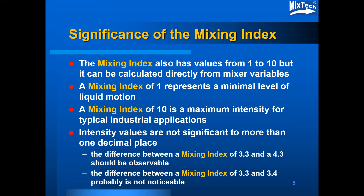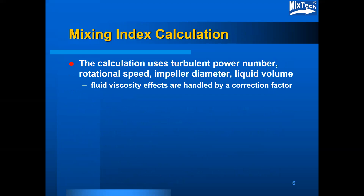The difference between a mixing index of 3.3 and 3.4 probably is not noticeable. The mixing index calculation uses the turbulent power number, the impeller rotational speed, the impeller diameter, and the liquid volume, all of which contribute to a mixing intensity.